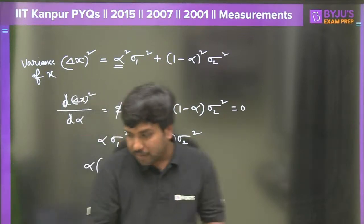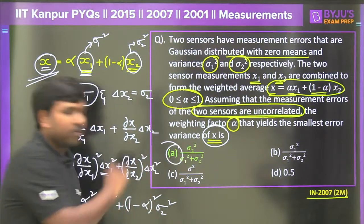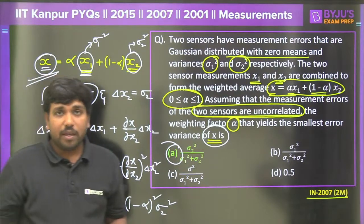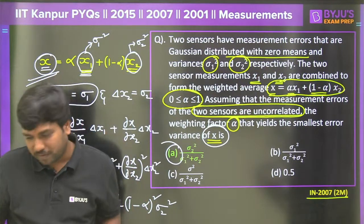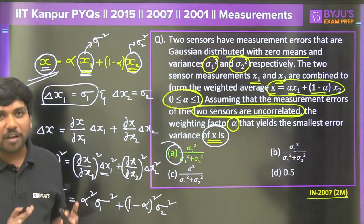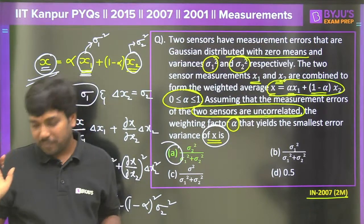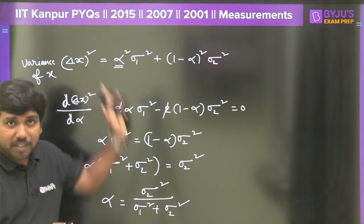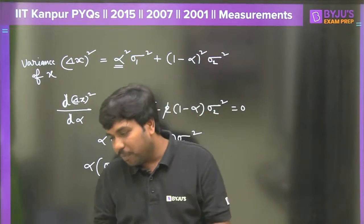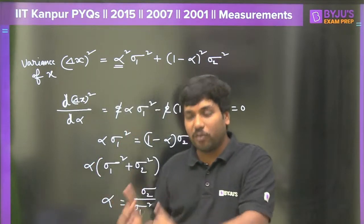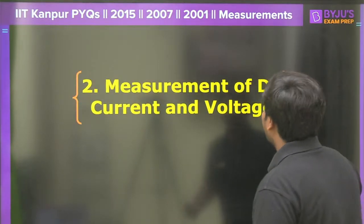Option A is the correct answer. This is the basic logic behind the actual solution using partial differentiation. This type of question — related to uncertainty analysis with uncorrelated sensors — has appeared 2 to 3 times in GATE examinations. Now let's move on to the measurement of DC current and voltage topic.